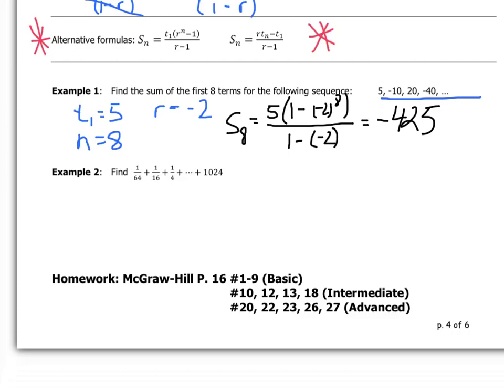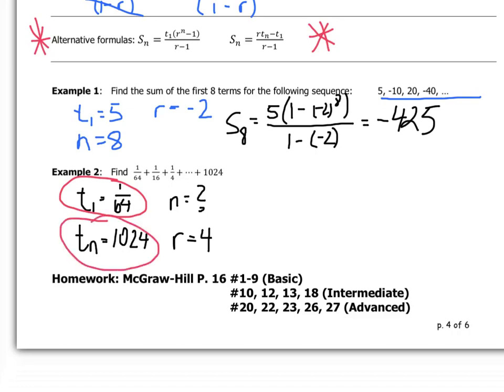In our second example, we're asked to find the sum: 1/64 plus 1/16 plus 1/4 plus dot dot dot up to the nth term, which is 1024. Pause the video and try it yourself first. We know t1 is 1/64, the final term tn is 1024, we don't know n, and the common ratio r is 4.